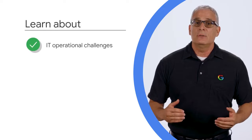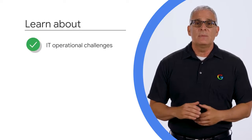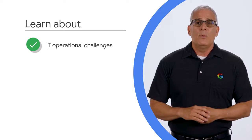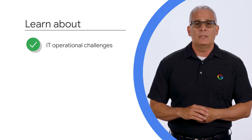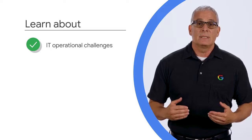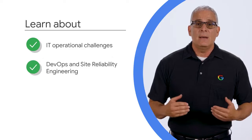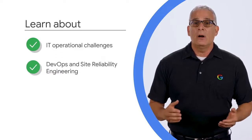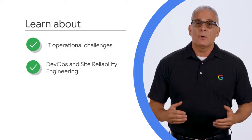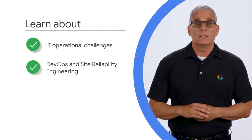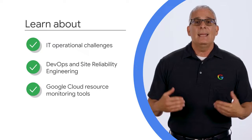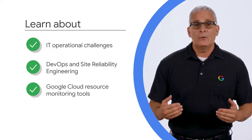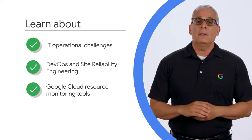In this module, I'll start by exploring IT operational challenges — specifically how IT teams are traditionally structured and why that structure prevents organizations from quickly delivering updates to services or fresh customer experiences. Next, I'll define what DevOps and site reliability engineering are and then use them as a framework for IT operational changes. Finally, I'll examine Google Cloud resource monitoring tools and how they help organizations maintain control and visibility of their cloud environment.